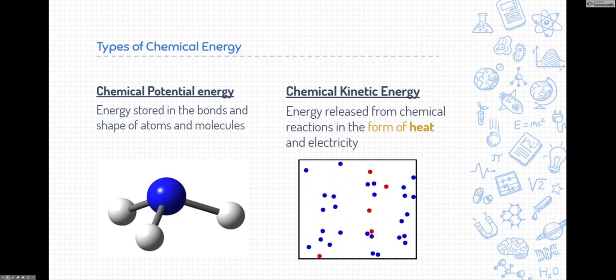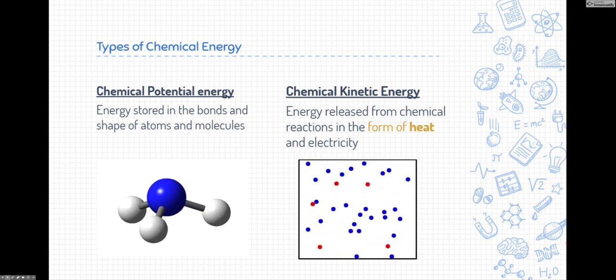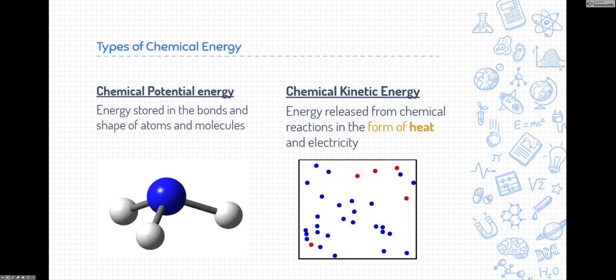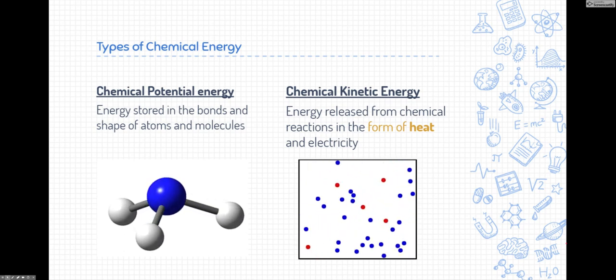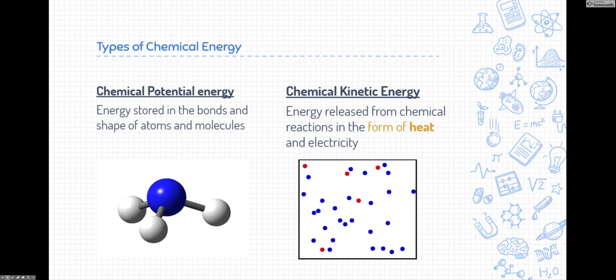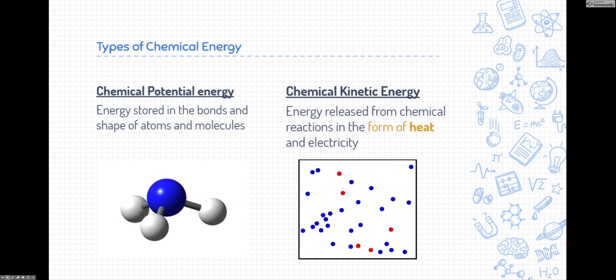Think about potential energy—potential meaning stored energy. Chemical potential energy is energy that is stored in the bonds and shapes of atoms and molecules. So this is energy that hasn't been used. It's just sitting there inside the chemical itself. You can think about a firecracker or a firework that has not been lit off yet. There's gunpowder or firework powder that hasn't been released. It's stored in there.